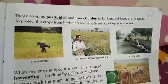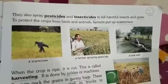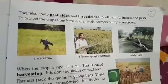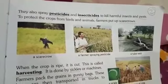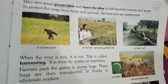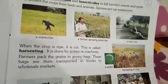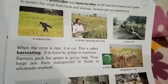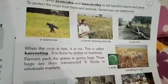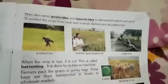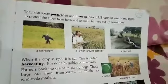Farmers also spray pesticides and insecticides in the field to kill insects and pests. To protect the crop from birds and animals, the farmer puts scarecrows in the field so that animals and birds will be scared of it and do not come to the field, as you can see in the picture.